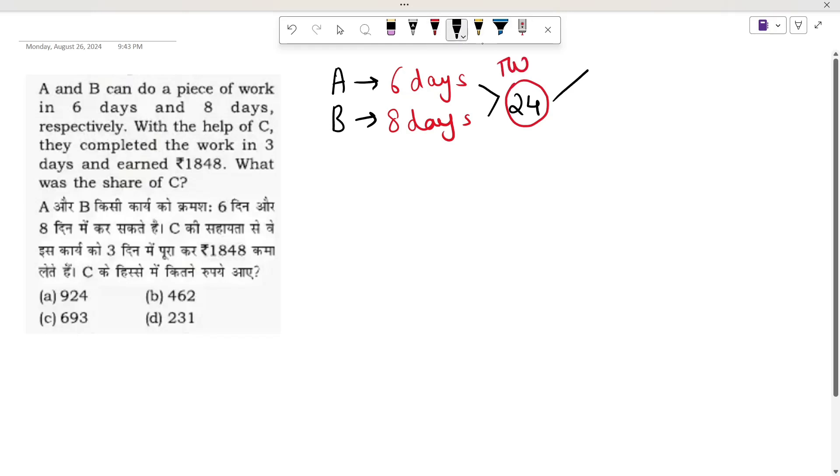Now A and B. I'm dividing 24 by 6, so who will multiply it? 4. 24 divided by 6 is 4. And 24 divided by 8 is 3. What do we call it? Efficiency. Efficiency of A is 4 units and B is 3 units. A will do 4 units in a day and B does 3 units in a day.